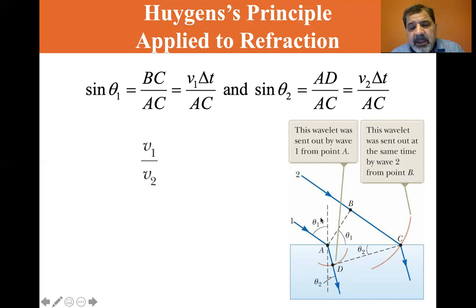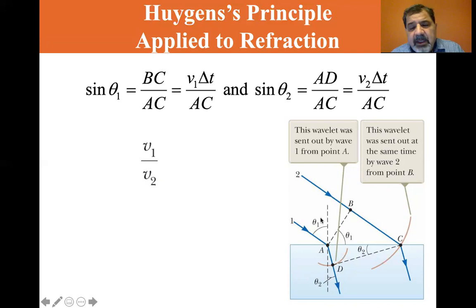So the sine of theta one is equal to BC over the hypotenuse, BC over AC. Well, BC is V1, the velocity of light, times delta T. And sine theta two, here's theta two, it's equal to AD over AC, AC being the hypotenuse. AD is the velocity two times delta T. This is velocity one times delta T. This is velocity two times delta T.